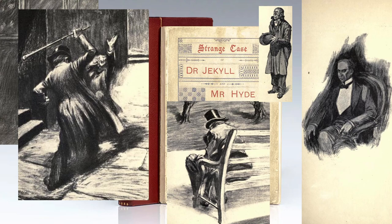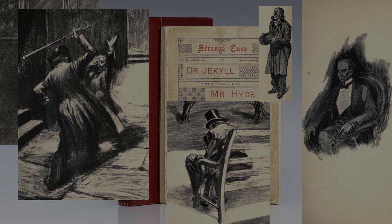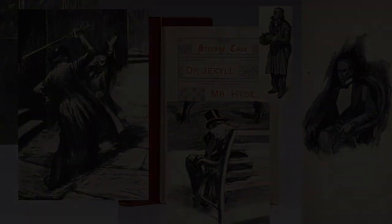Unable to recreate the potion and facing a life permanently in the form of Mr. Hyde, he writes out a confession while locked away in his laboratory. When Mr. Hyde gains control, he faces the prospect of life in prison or execution. As such, he chooses to drink poison rather than be hanged.